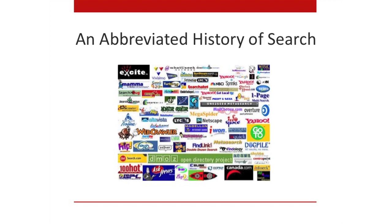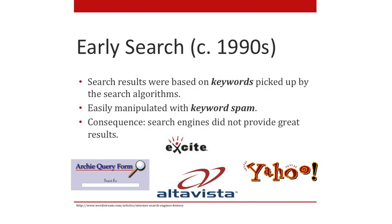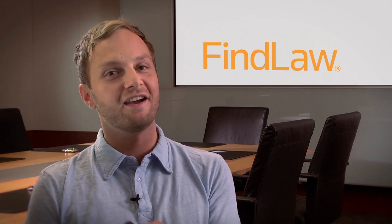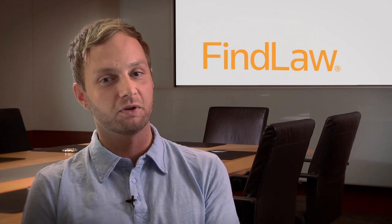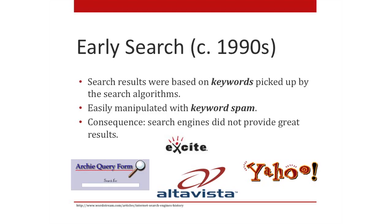Next we're going to talk through an abbreviated history of search, because you can't really understand how a link impacts search without a little background. In early search — the early to mid 90s — results were based entirely on keywords. They were picked up by search algorithms, put into indexes, and offered as results. These were easily manipulated with keyword spam; you could add one single line of code and rank number one. The result was search engines really didn't provide great results.